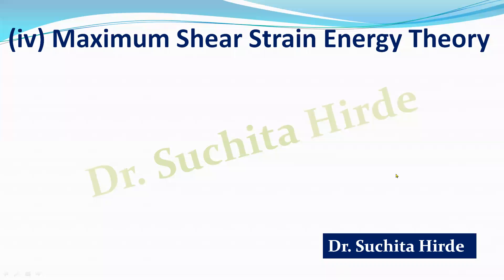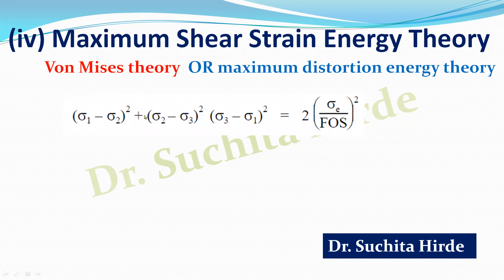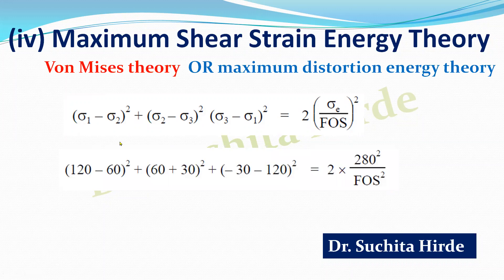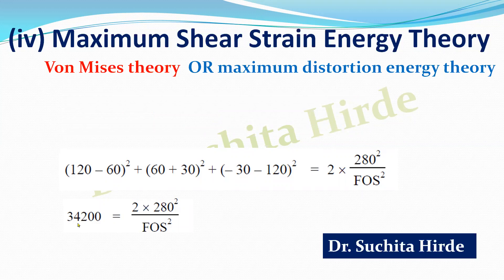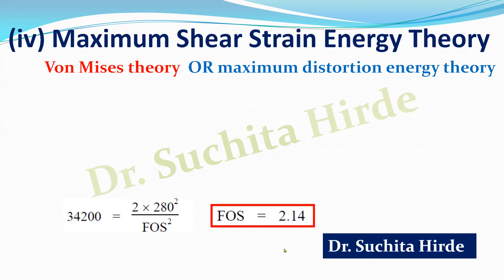The fourth failure theory is maximum shear strain energy theory, also called Von Mises theory. Substituting sigma_1 = 120, sigma_2 = 60, and sigma_3 = –30 (remembering sigma_3 is negative) into the Von Mises expression, the left-hand side evaluates to 34200, which equals 2 × 280² / FOS². Solving, the factor of safety is 2.14 using Von Mises theory.